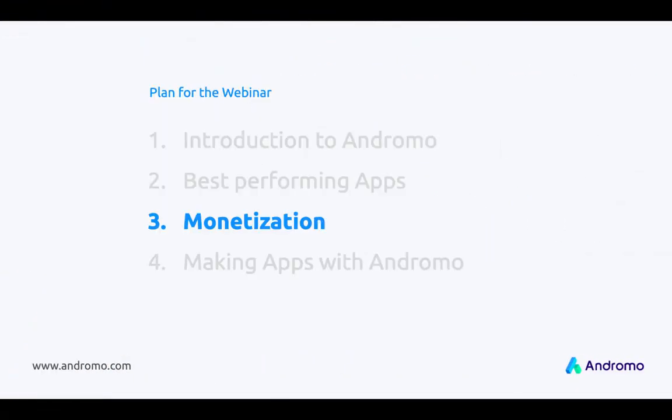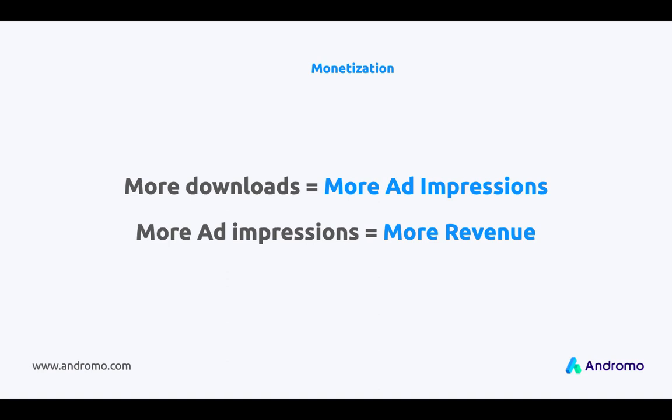So now we can speak about monetization. We just saw several cool apps with thousands of downloads and some even with millions. The more downloads your application has, the more ad impressions will be shown to users, and the more ad impressions are shown, the more revenue the developer gets. So basically there are two basic types of ads in Andromo: banners and interstitial ads.